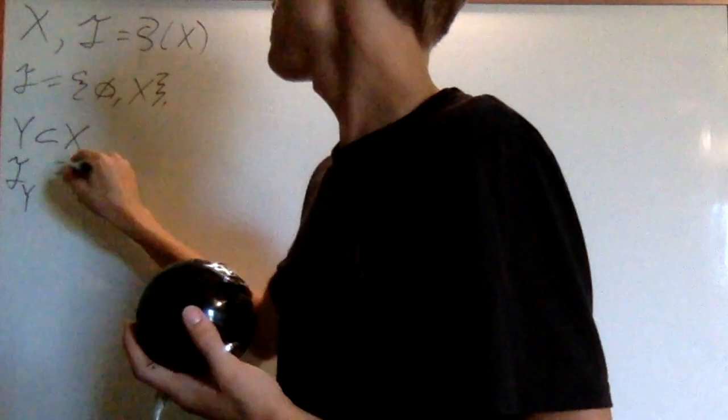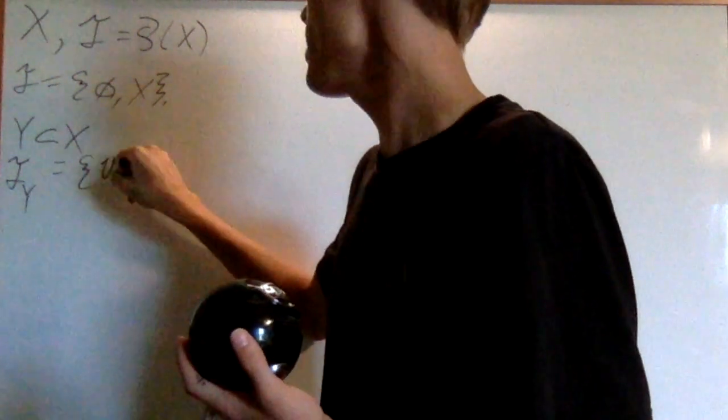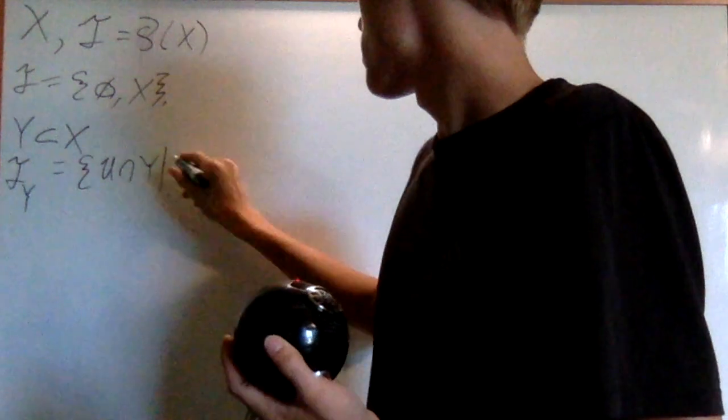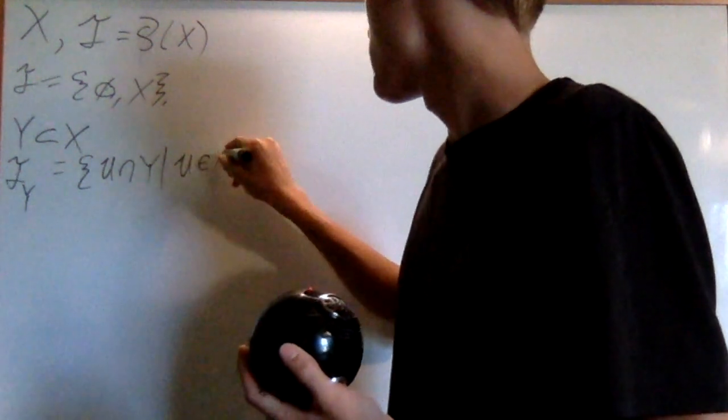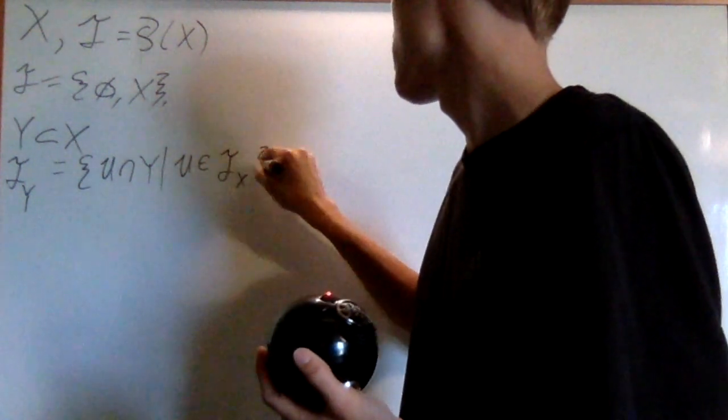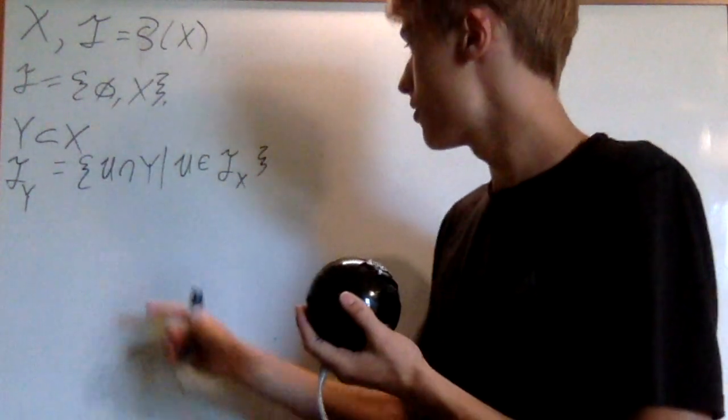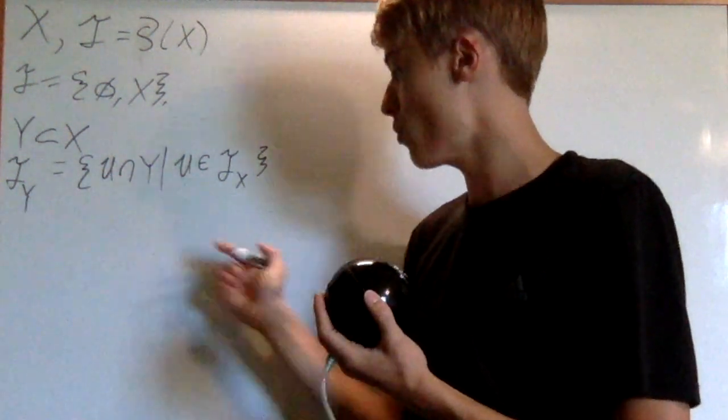and it's going to be the set of U intersect Y for U an element of the topology on X. So it's the collection of open sets in X intersect Y.